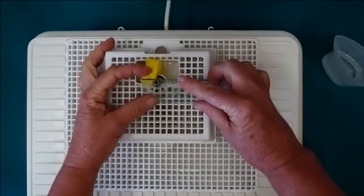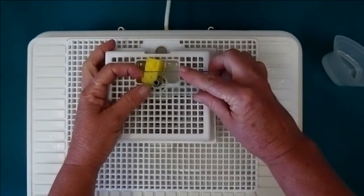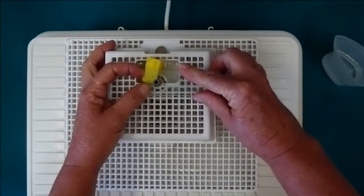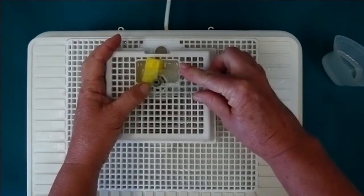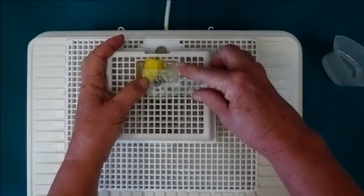We're going to start our hole by holding the glass at a 45 degree angle to the bit edge, and as we feel the bit grab the glass, we're going to slowly rotate the glass until it sits flat on top of the bit.